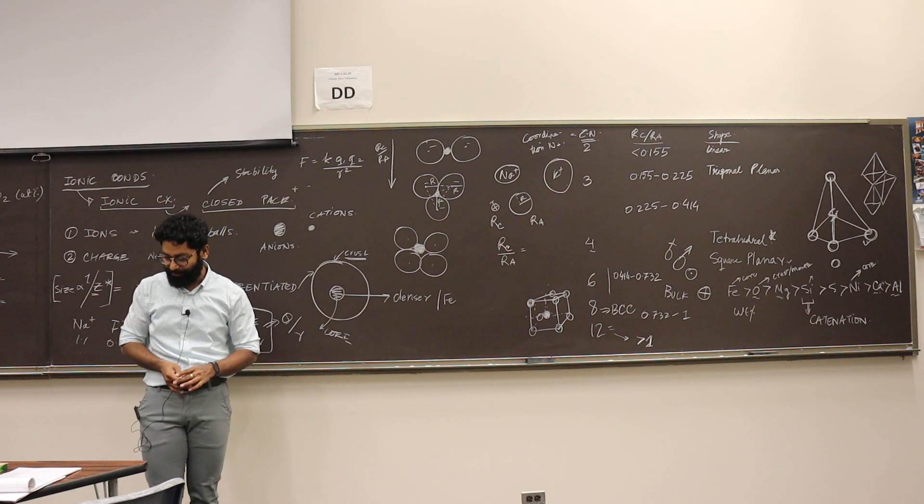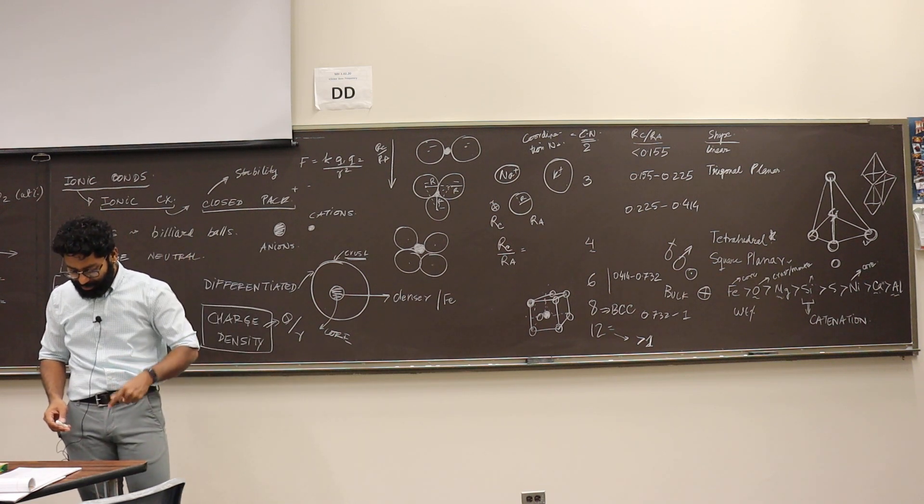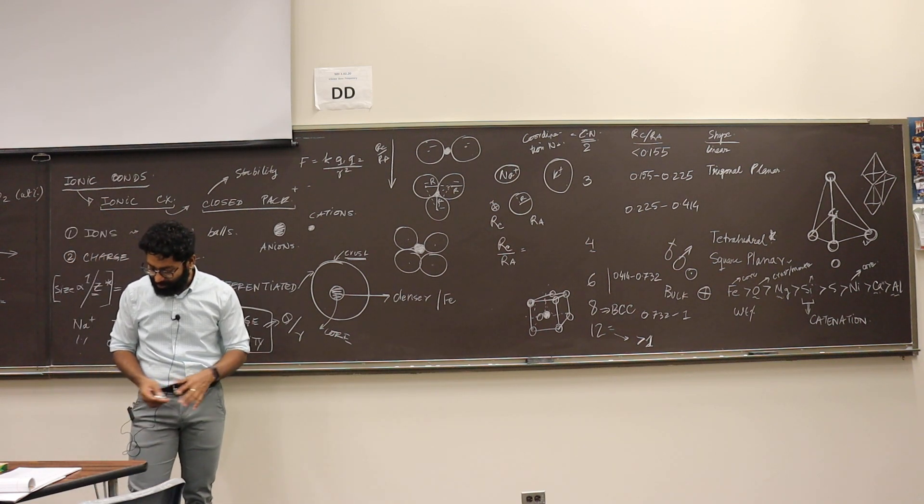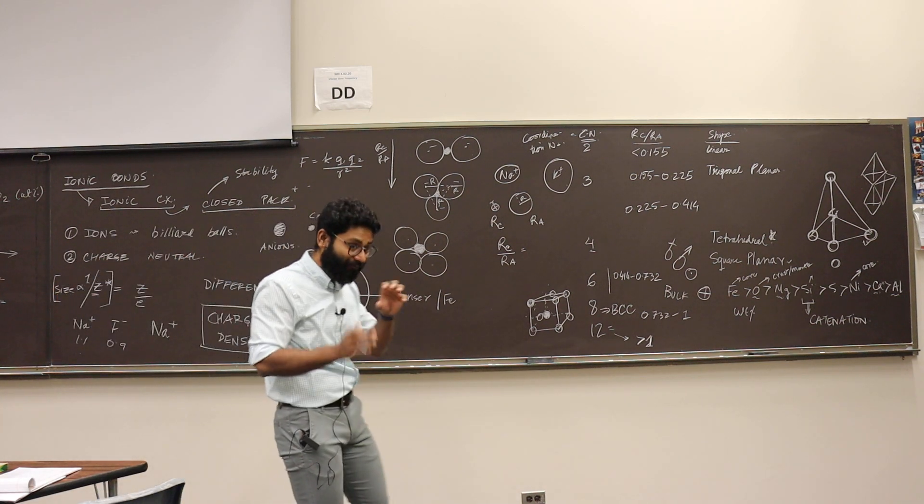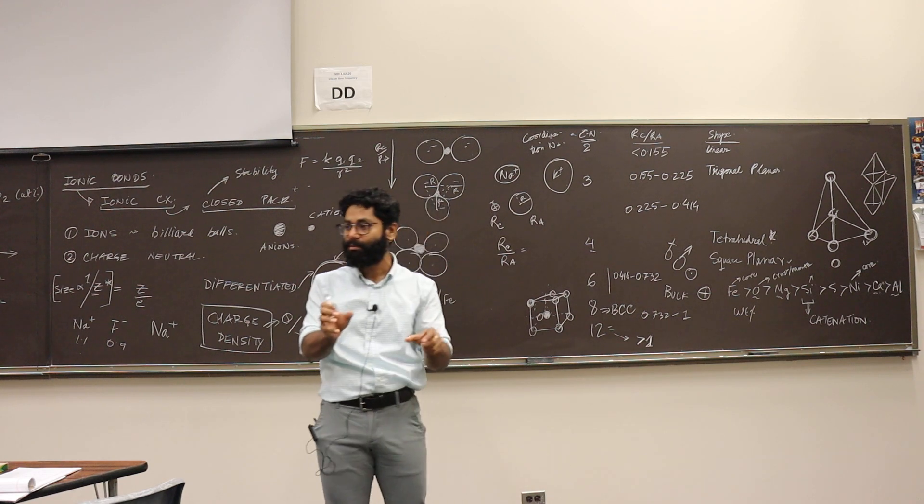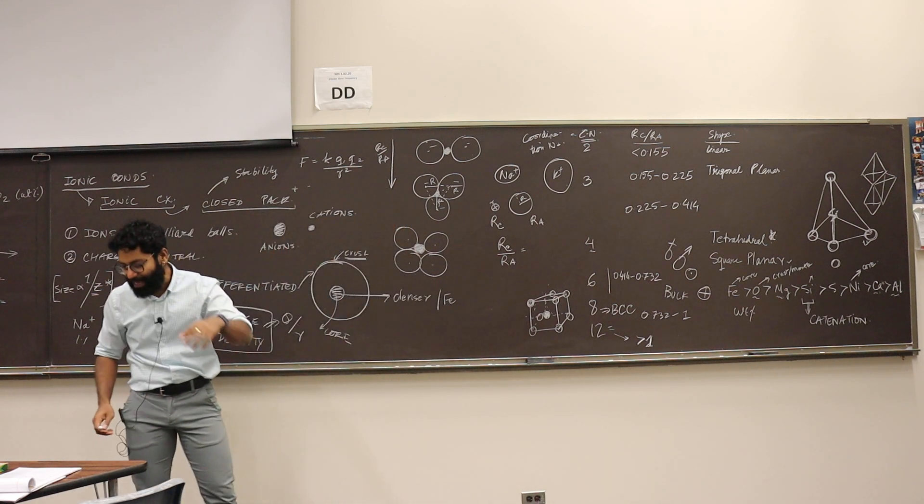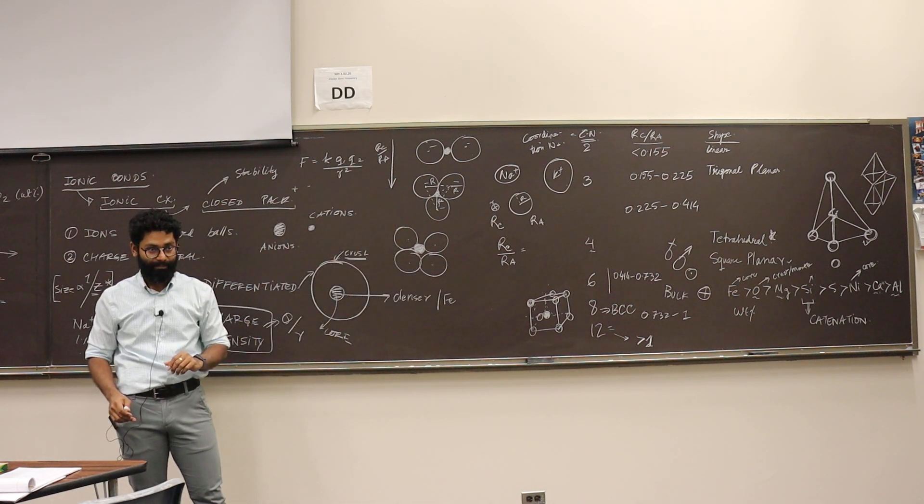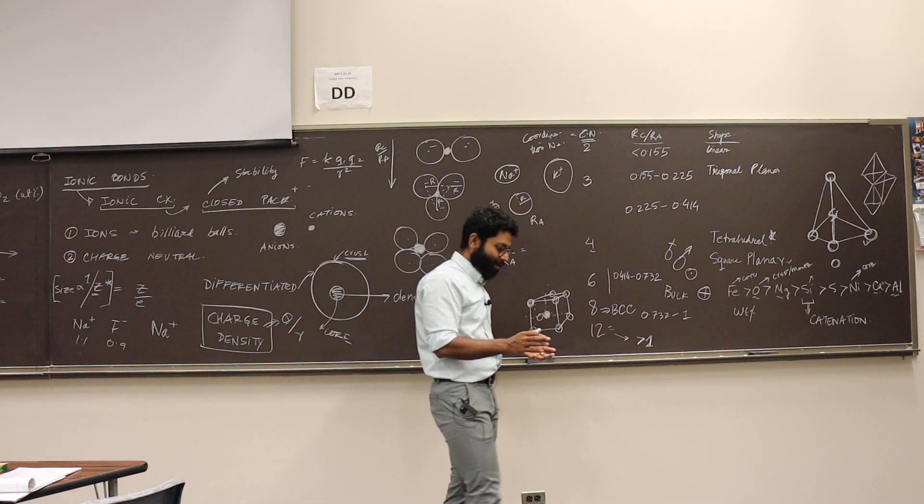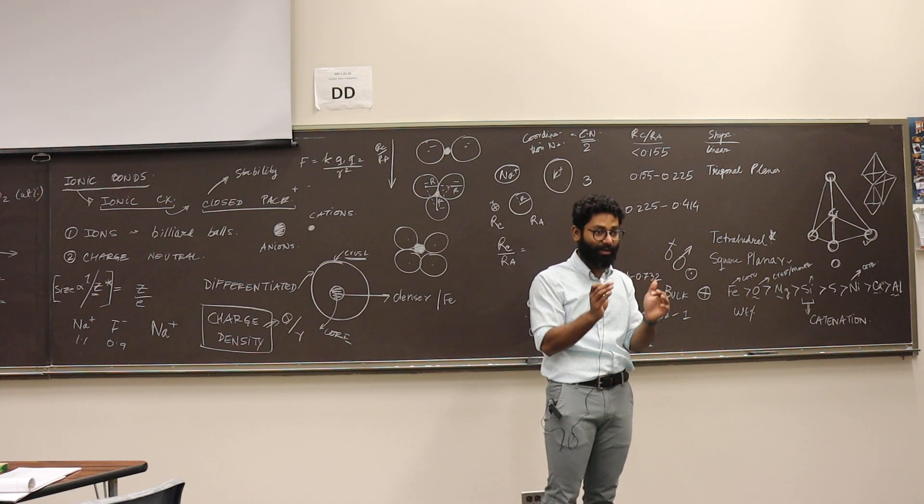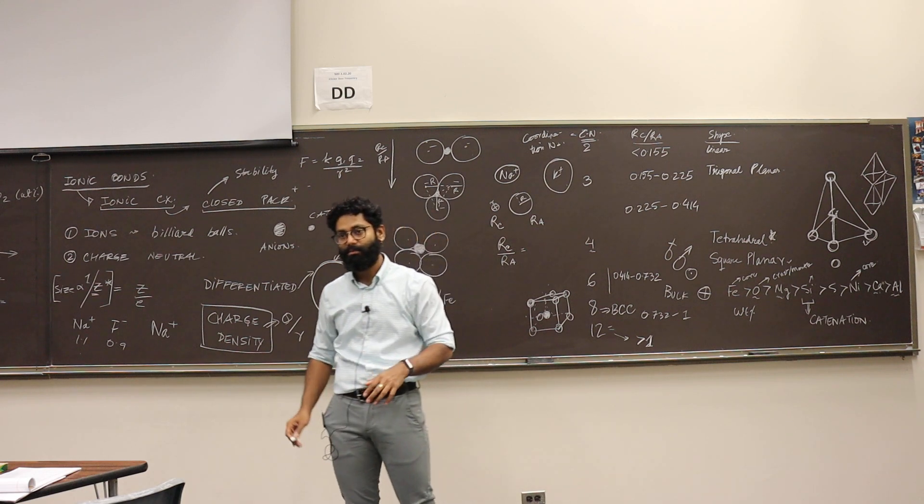So he said if there are groups of cations that have almost the same size and the same charge, like Na+ and Cu2+, they have very similar size and they have same charge, sometimes they do not replace each other. Why do you think?